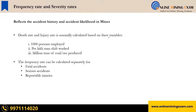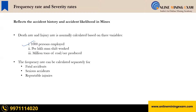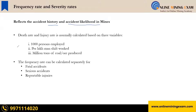Death rate and injury rate are normally calculated based on three variables. First is per thousand persons employed. Second is per lakh man-shift work. Third is per million ton of coal produced. Frequency rate and severity rate can be calculated separately for each of these variables.